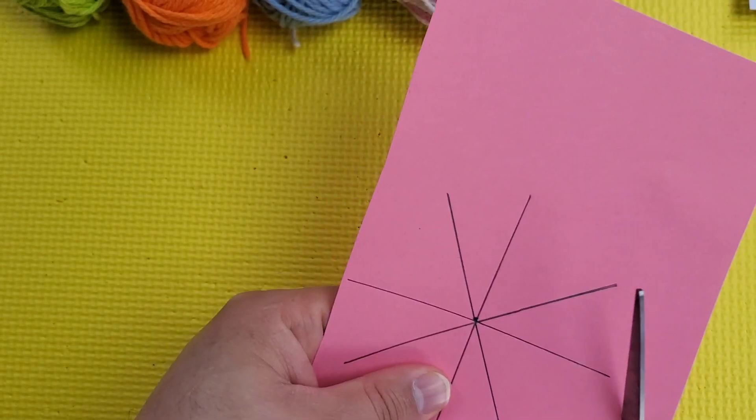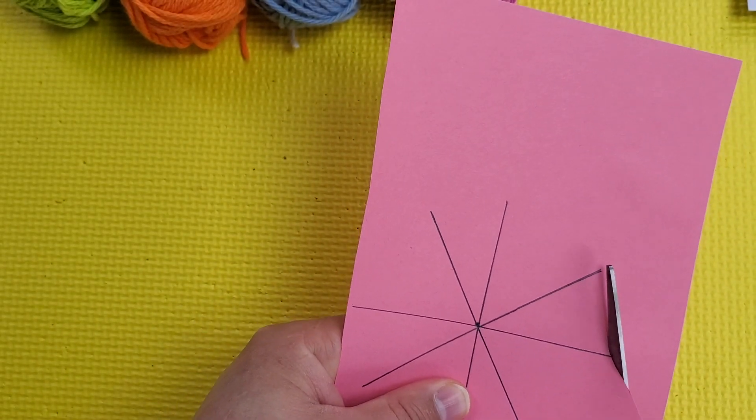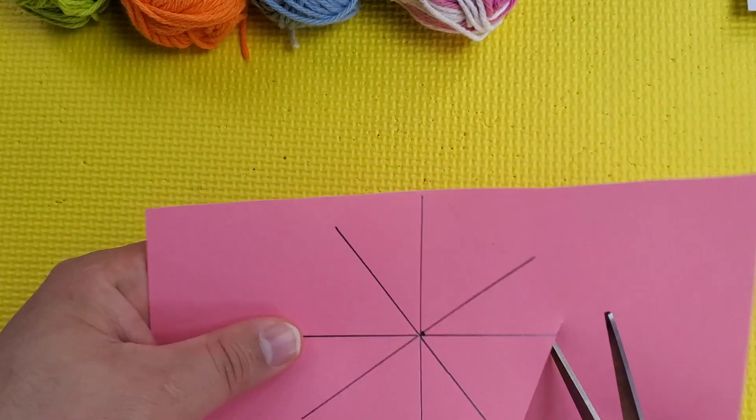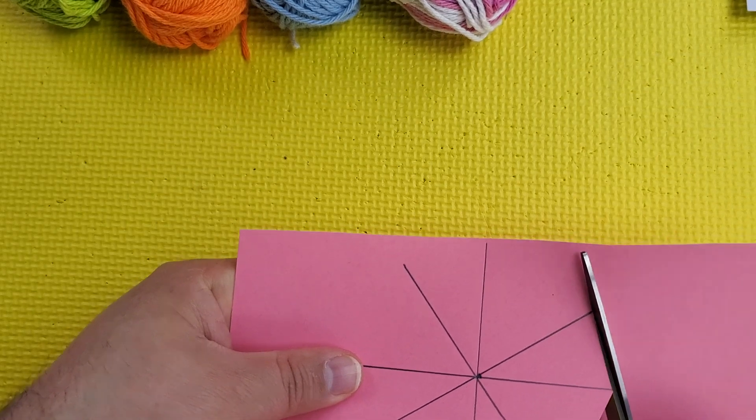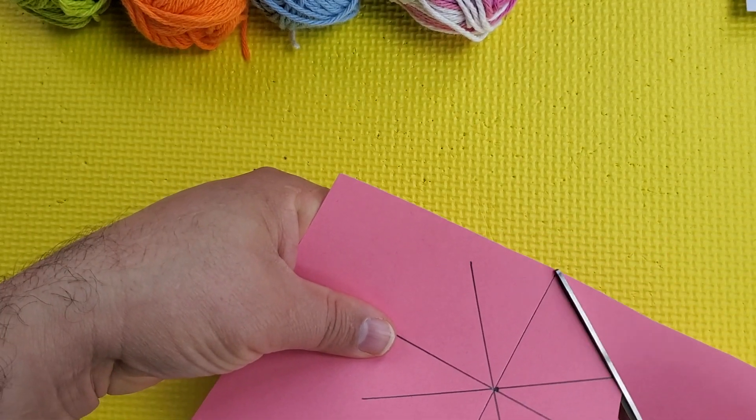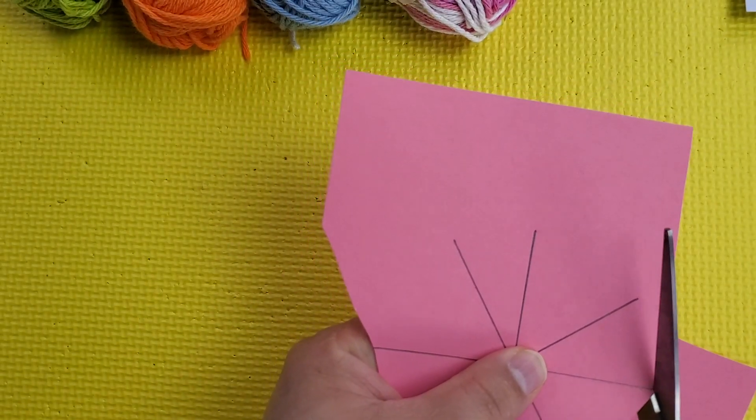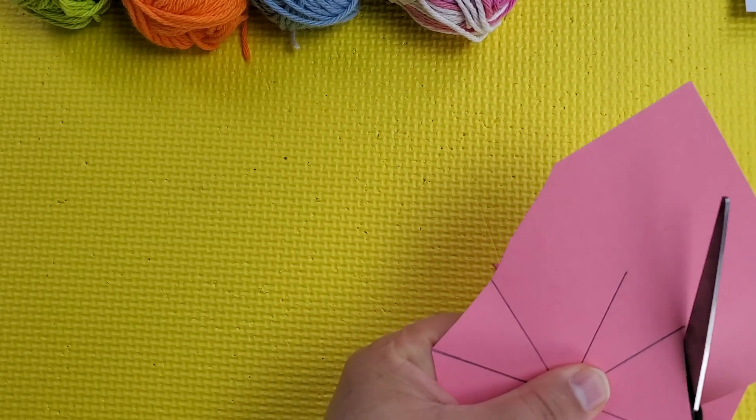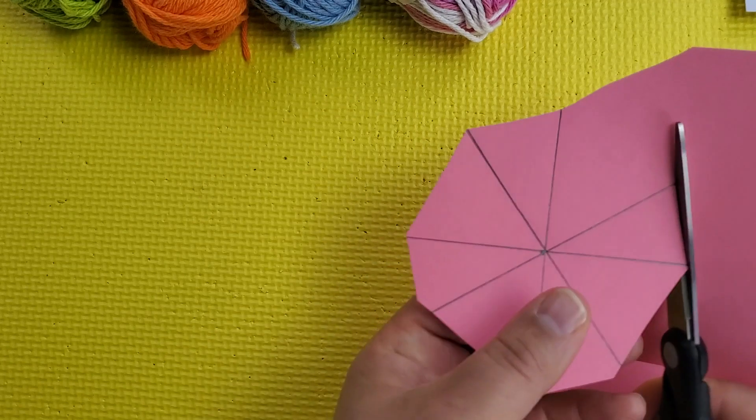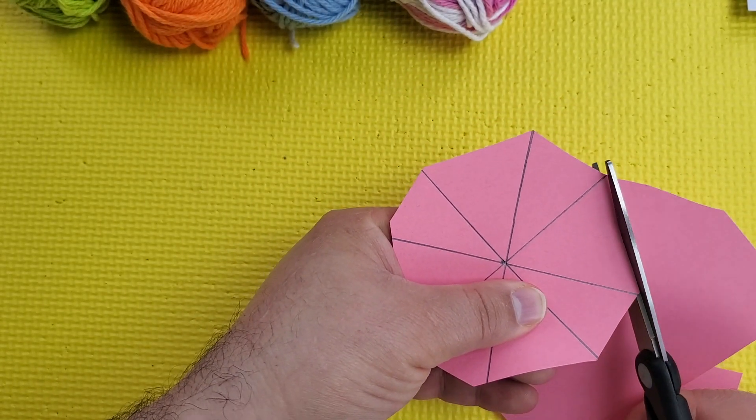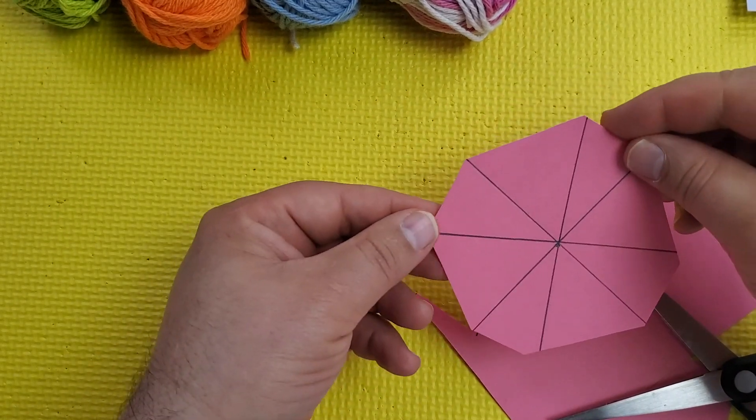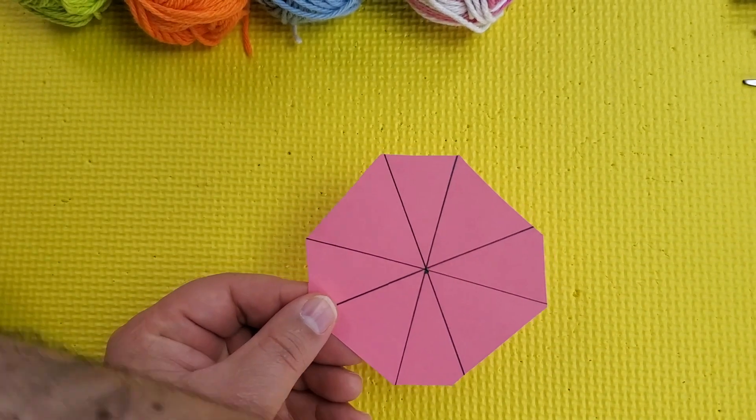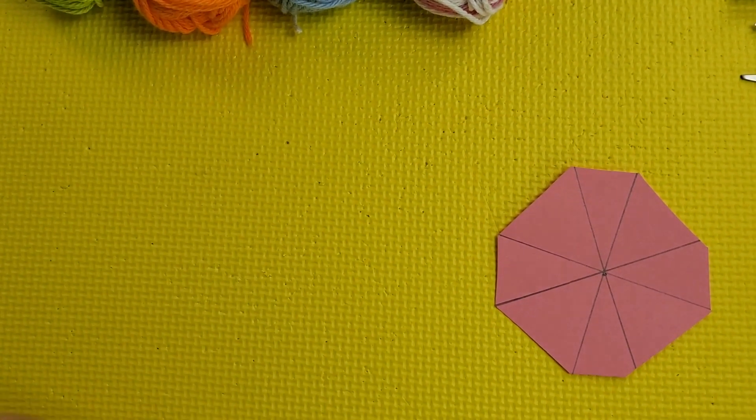And now, with your scissors, you have to, like drawing, you have to cut connecting every point of your star. So cut connecting. Make a shape of a polygon with eight sides. How is it named? Could you try to find the name of this shape? What's the name of this shape with eight sides? Try to find it. You're going to do a review of math polygons.